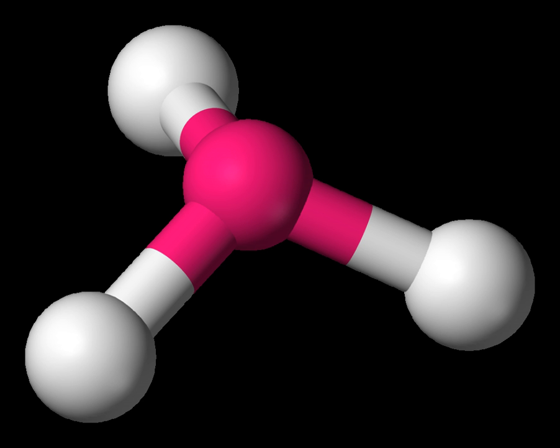In chemistry, a trigonal pyramid is a molecular geometry with one atom at the apex and three atoms at the corners of a trigonal base, resembling a tetrahedron.